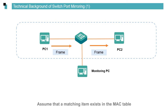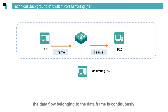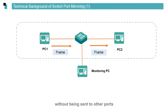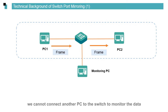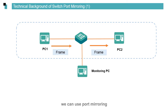Assume that a matching item exists in the MAC table. If the switch receives a unicast data frame sent from PC1 to PC2, the data flow belonging to the data frame is continuously switched between the two ports without being sent to other ports. Because the data sent between the two PCs is unicast, we cannot connect another PC to the switch to monitor the data. To monitor the traffic sent between PC1 and PC2 on another PC, we can use port mirroring.